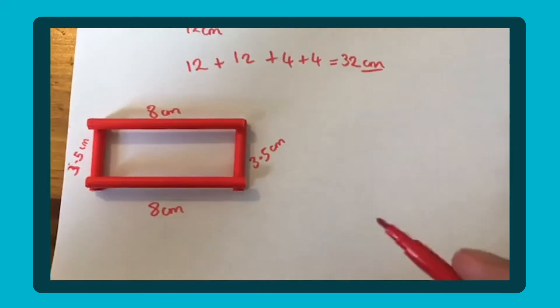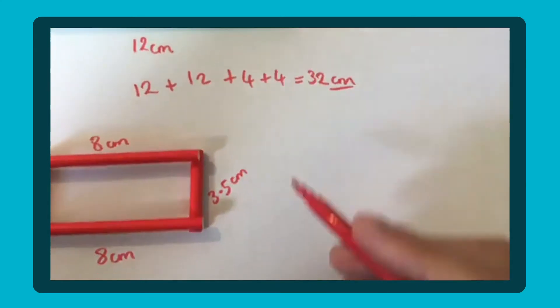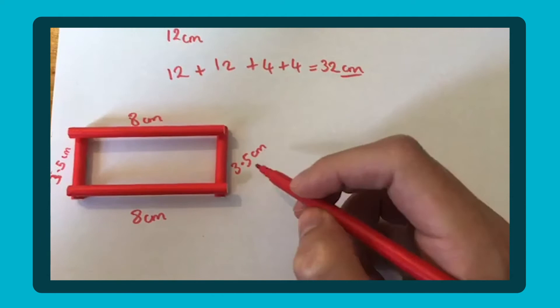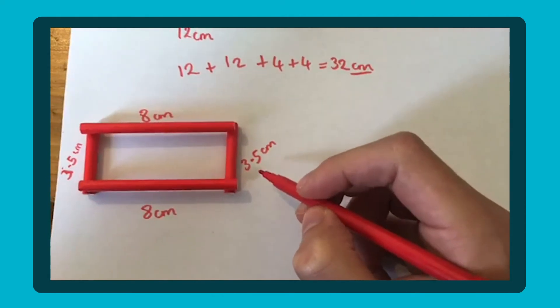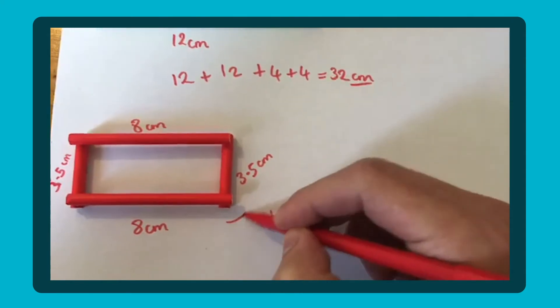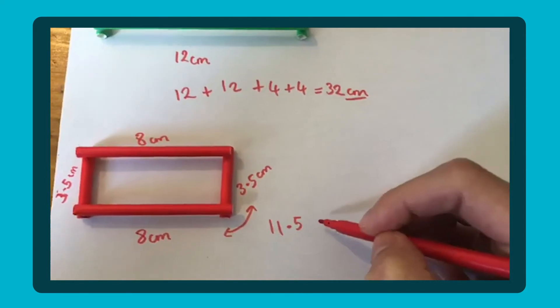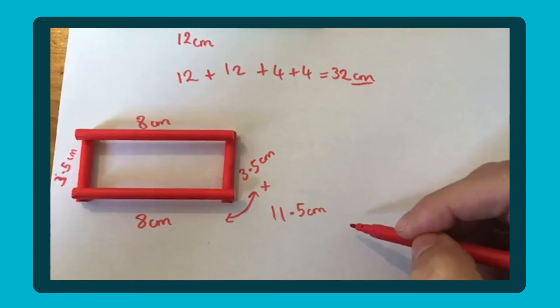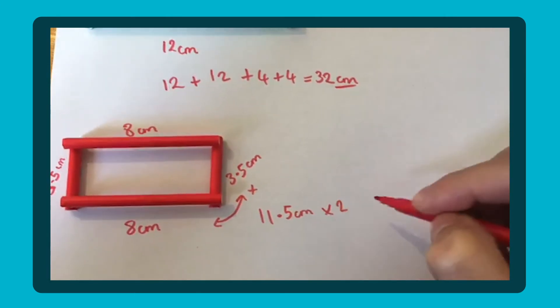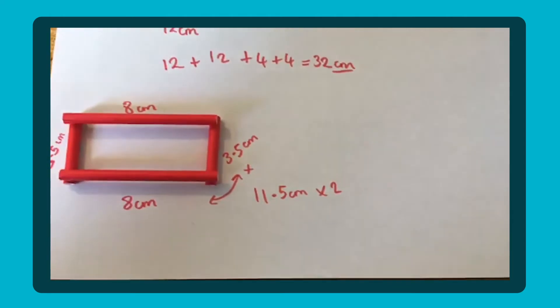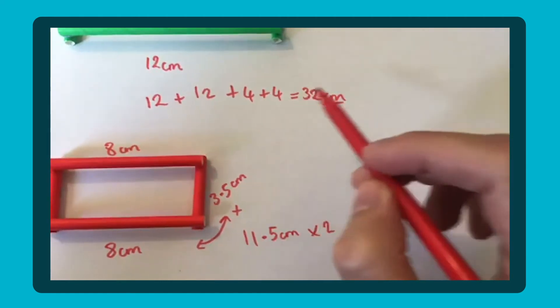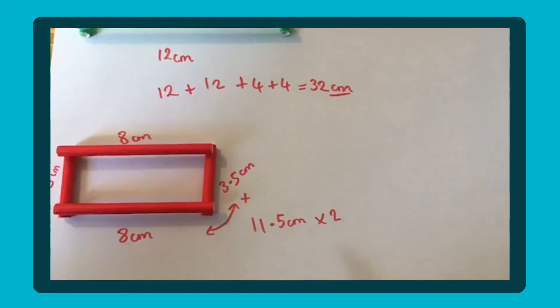So the other way, instead of adding up each side is taking the length and the width. So we know eight and 3.5. So that's 11.5 centimeters. Those two together, those two there, we've added those two together. And you could times that by two because they're the same lengths there. And we're just doubling it. And that's the other way you could find perimeter. And it's about asking your child why that works as well as adding up each individual side as well.